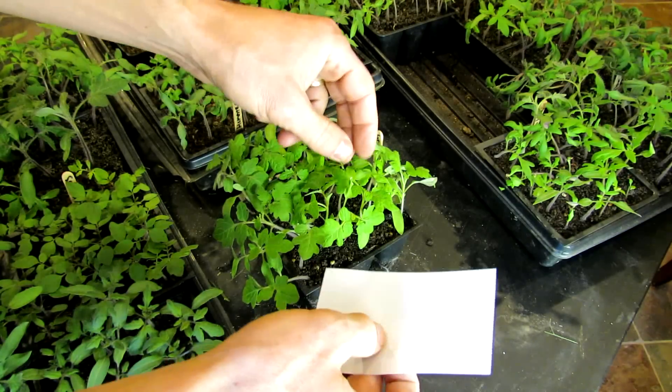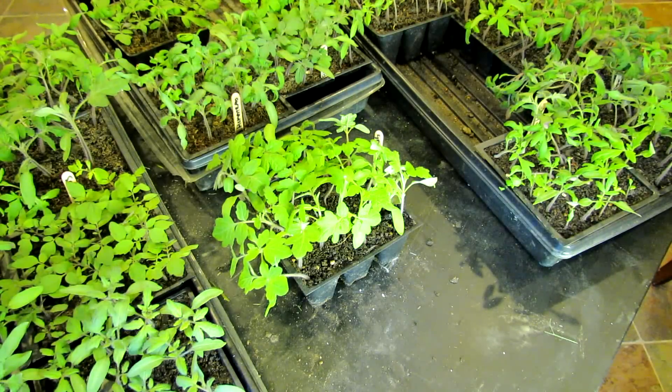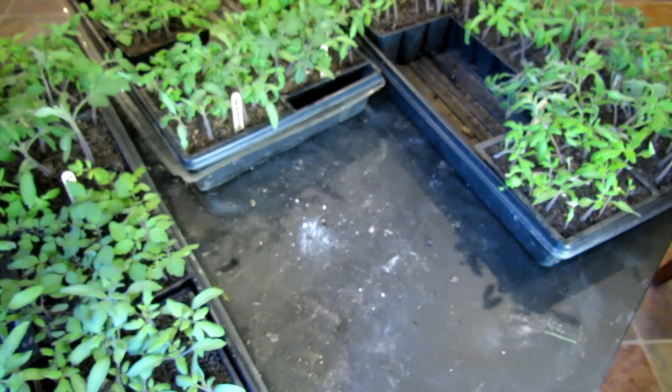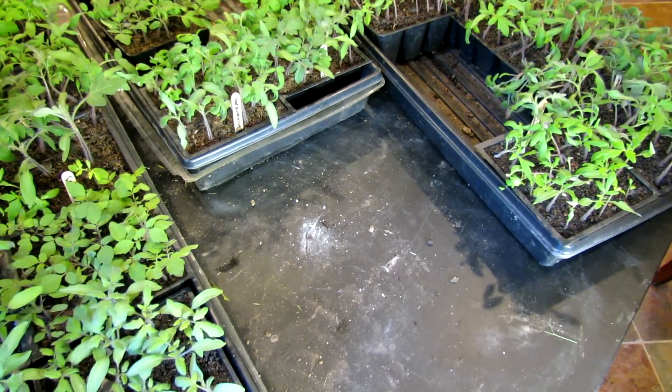Now, where things get tricky is the standard tomato leaf, like you're looking at now, can come in different shapes. But just keep in mind, you have the potato leaf that has no scalloping, it's smooth, and then you have the standard leaf.